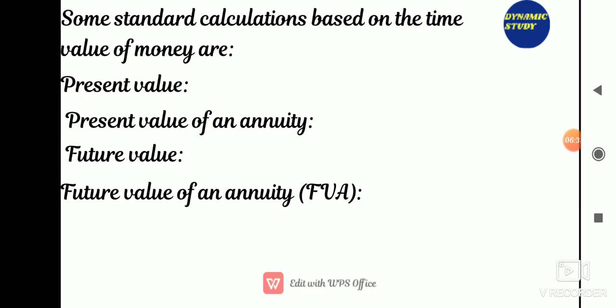Present value of an annuity: an annuity is a series of equal payments or receipts that occur at evenly spaced intervals — like leases and rental payments. The payment or receipt occurs at the end of each period for an ordinary annuity, while they occur at the beginning of each period for an annuity due.